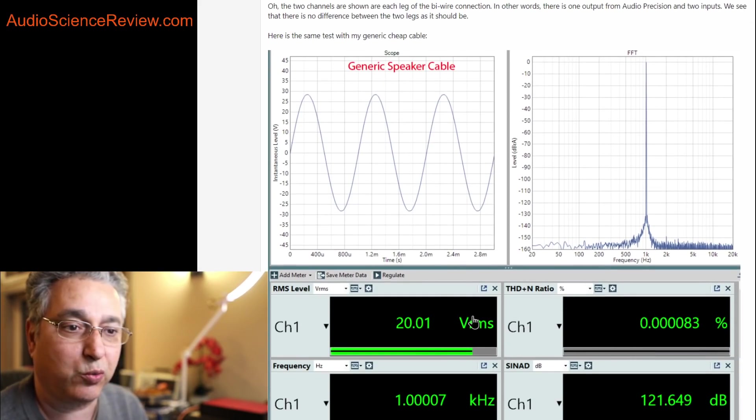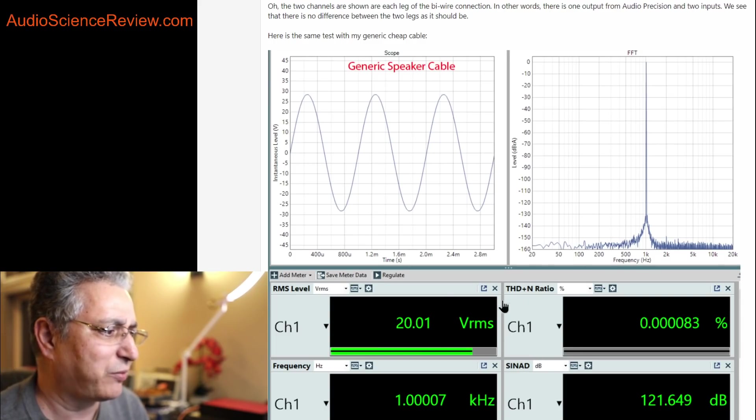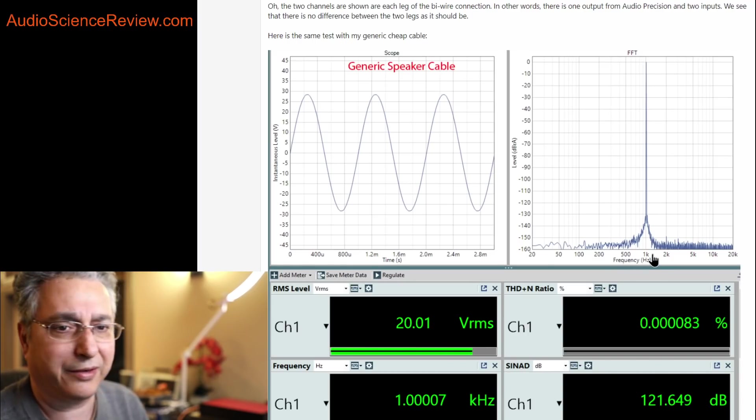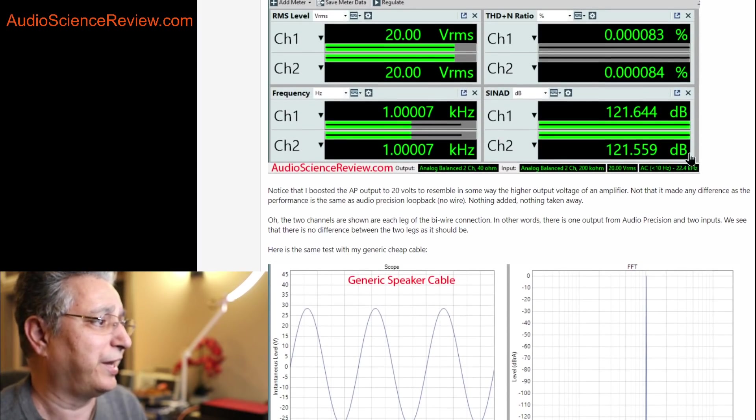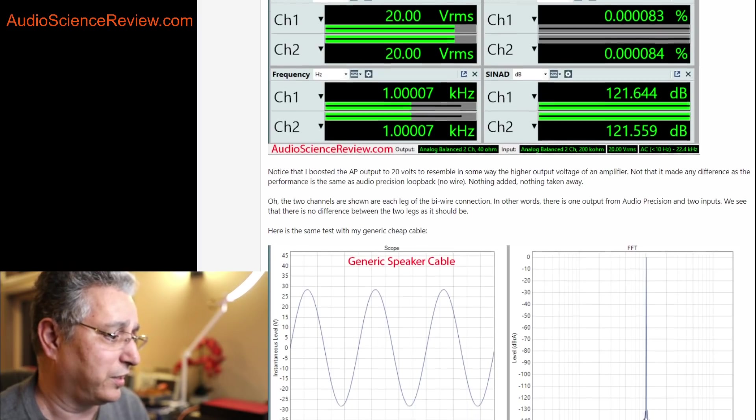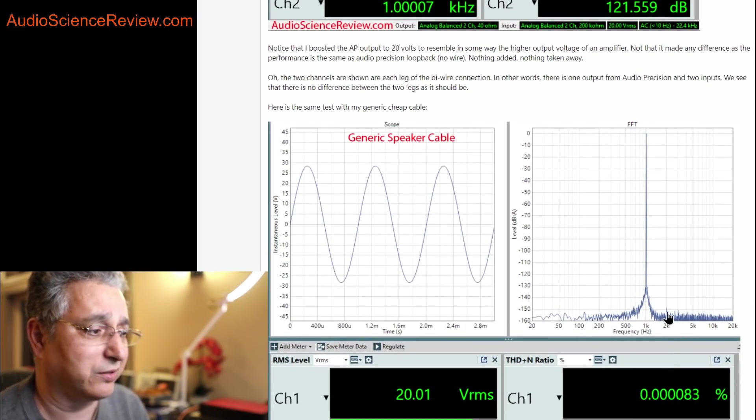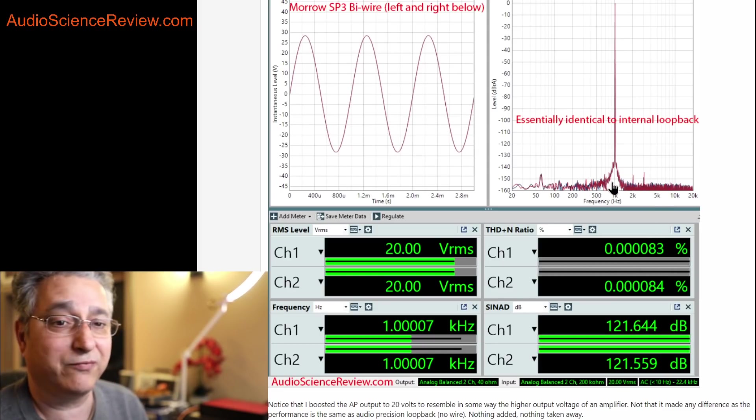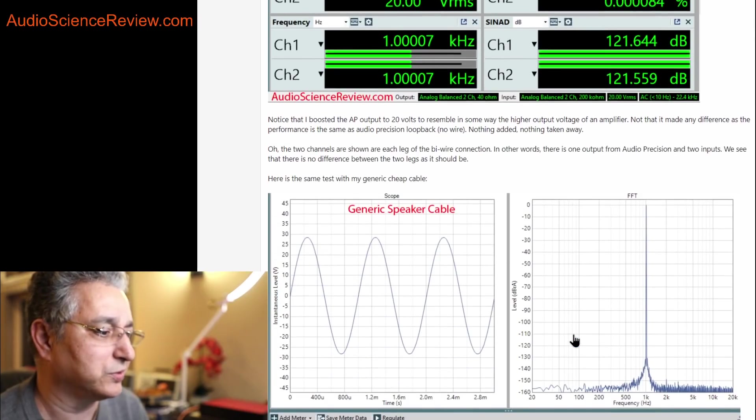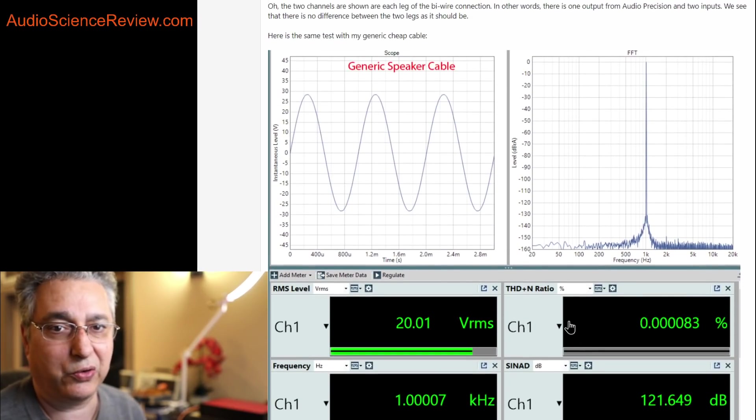We see that now there's only one channel here because I'm just going from one input to one output. I ran this at a slightly different time, so the exact numbers are a little bit different. Analyzer's not perfect, even depending on time and temperature it varies just a bit. But we can see the SINAD is 121.6 dB, and it was 121.6 dB before.